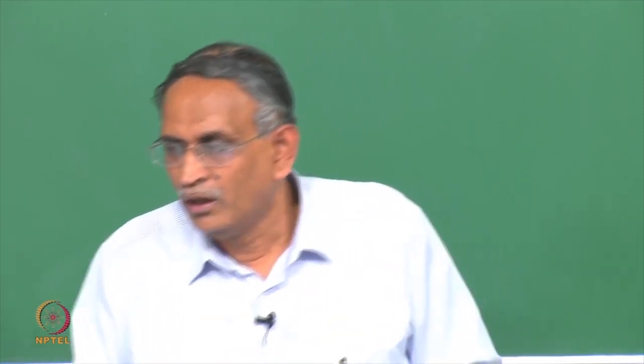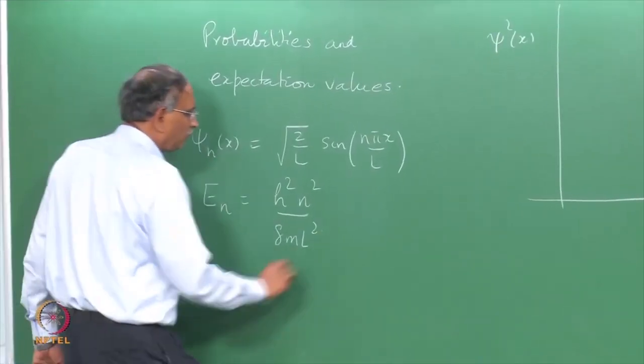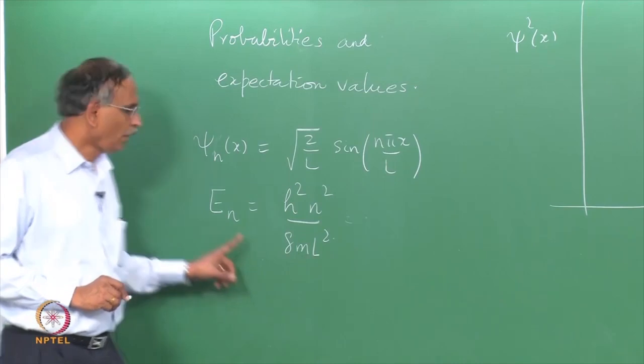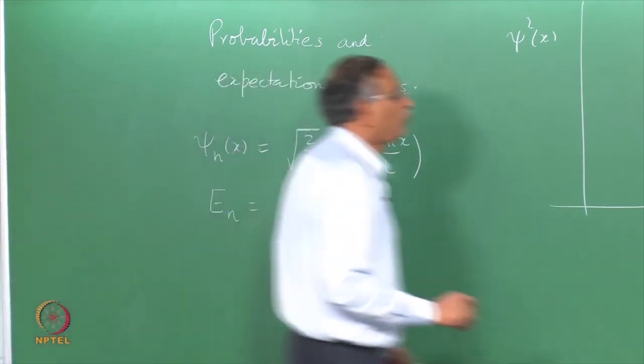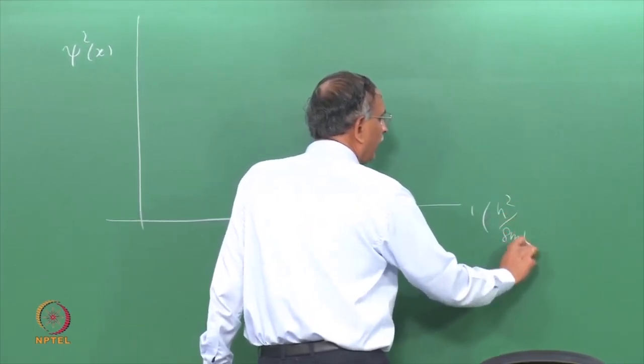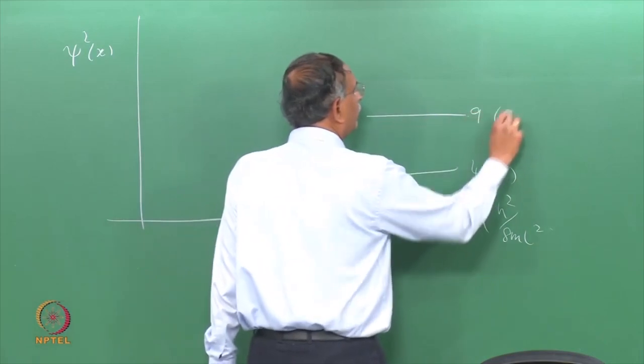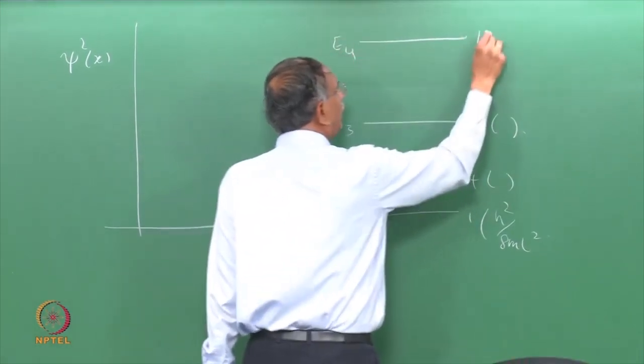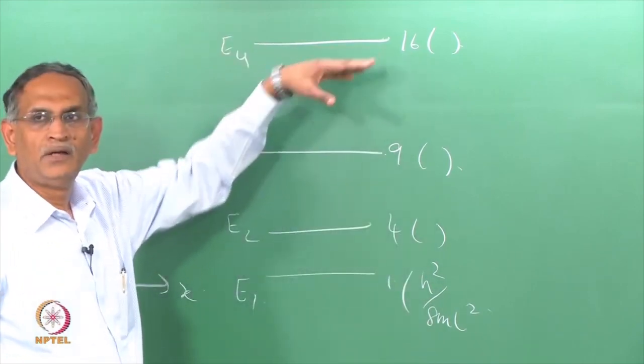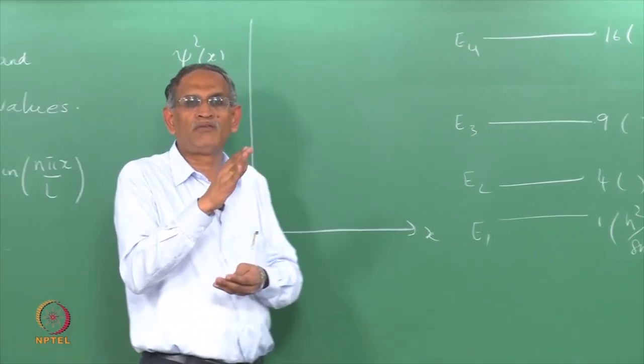There are two conditions. In the energy expression h square and n square, the mass of the particle m and the length of the box l both determine what is the spread between different energies. If you plot e1, it is 1 times h square by 8 m l square, e2 is 4 times that unit, e3 is 9 times that unit, e4 is 16 times that unit. As you increase this energy, the gap between the energies increases.